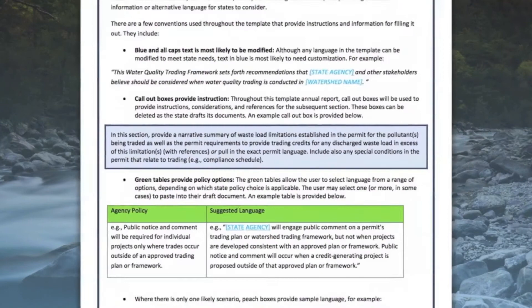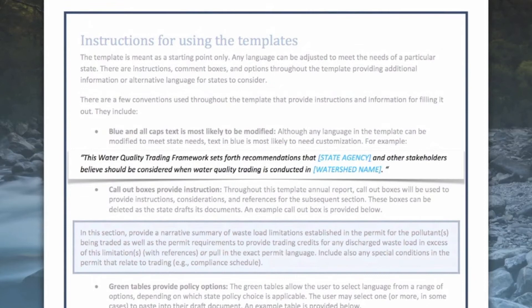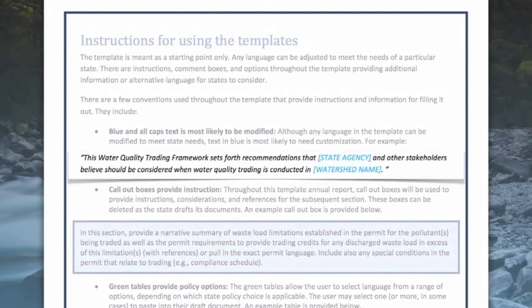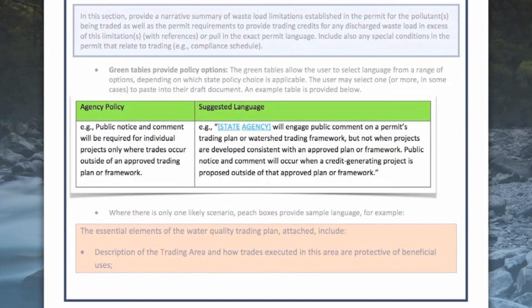Now to the conventions. Blue boxes provide background and context. Blue all-caps text is most likely to be modified — although any language in the template can be modified to meet state needs, text in blue is most likely to need customization. Green tables provide policy options, allowing the user to select language from a range of options depending on which state policy choice is applicable. The user may select one or more options to paste into their draft document. Where there is only one likely scenario, peach boxes provide sample language.